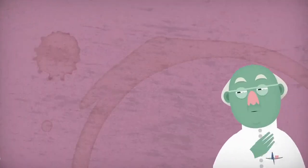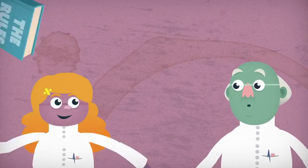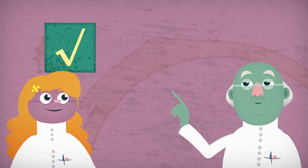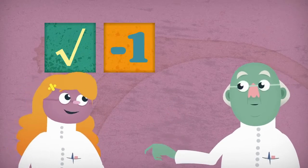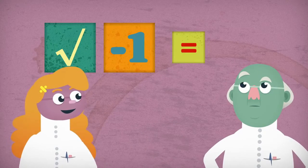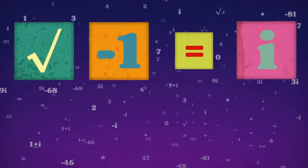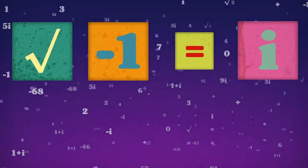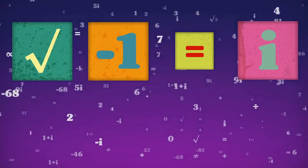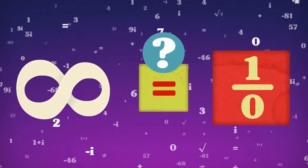Does that really settle things, though? After all, mathematicians have broken rules before. For example, for a long time there was no such thing as taking the square root of negative numbers. But then mathematicians defined the square root of negative 1 as a new number called i, opening up a whole new mathematical world of complex numbers. So if they can do that, couldn't we just make up a new rule? Say that the symbol infinity means 1 over 0 and see what happens?